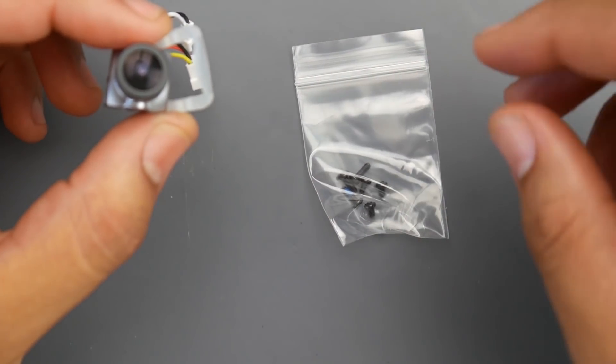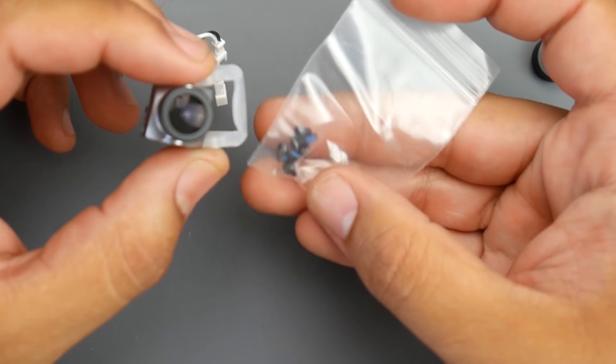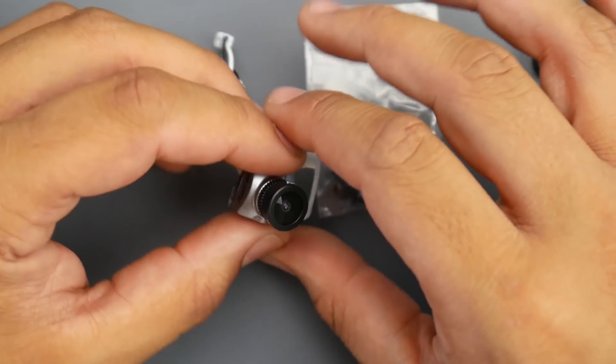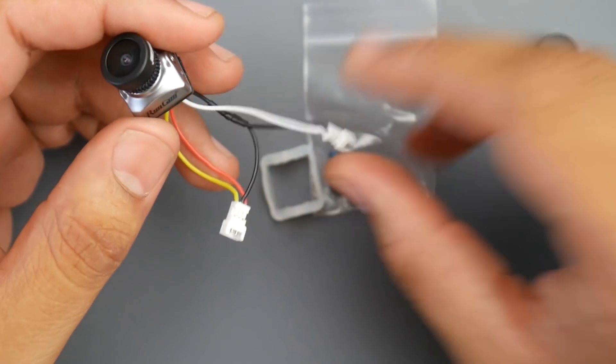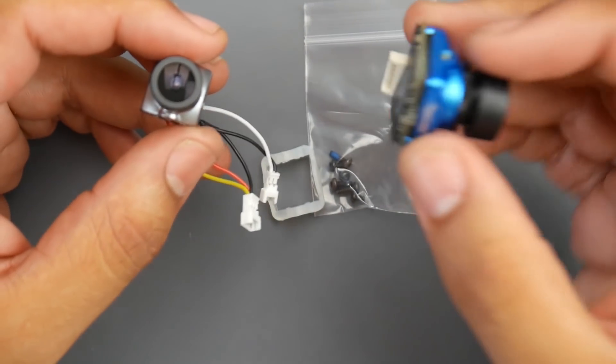However, they don't give you the OSD remote, so you might have to purchase that separately, or hopefully you have a previous camera that came with the OSD remote in order to change some of the settings. It is a CMOS camera.